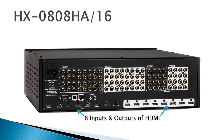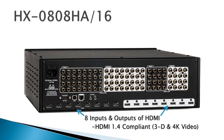On the HDMI side, if you can see here, we have eight inputs and outputs of HDMI. All Avocation Systems HDMI matrix routers are HDMI 1.4 compliant, which means they will do 3D and 4K video. They also internally manage your EDIDs and HDCP keys, which means setup is extremely easy.